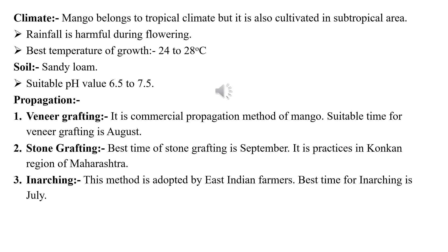Almost all propagation methods are performed during the green plant growing season because moisture content is higher, which is required for a high percentage of success. Stone grafting — also known as epicotyl grafting — is generally practiced for early plant preparation and is commercially practiced in the Konkan region of Maharashtra. The best time for stone grafting is September. Inarching is adapted by East Indian farmers, with the best time in July. Inarching is also known as approach grafting.